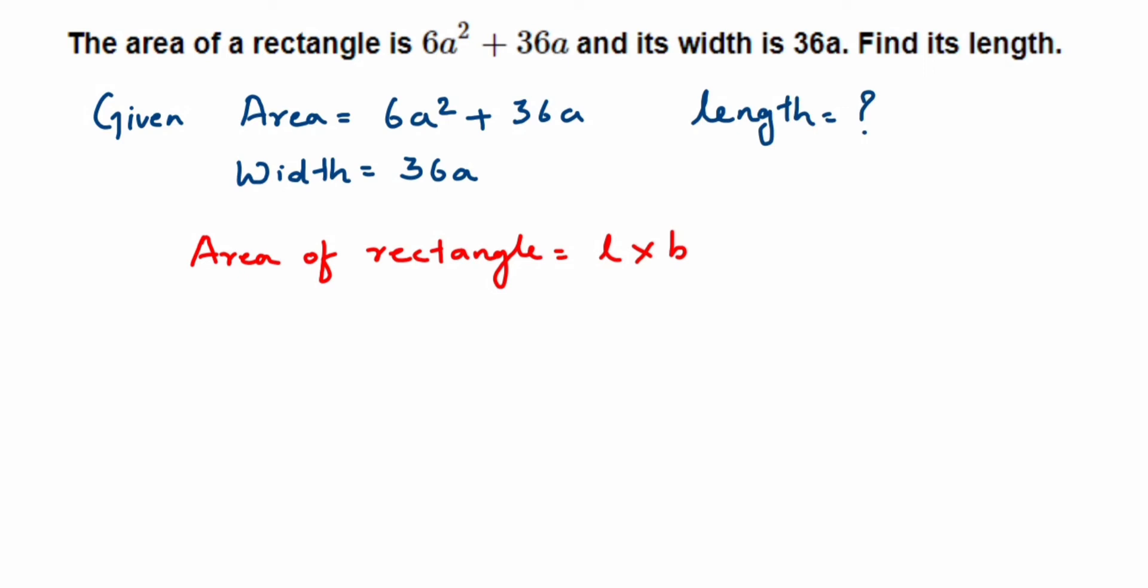So here we're going to substitute it. Area we know from the question, which is 6a² + 36a, into length we don't know. Breadth we know, and breadth is given as 36a.